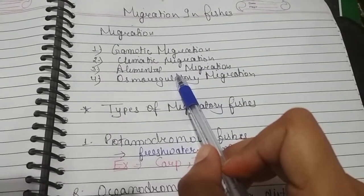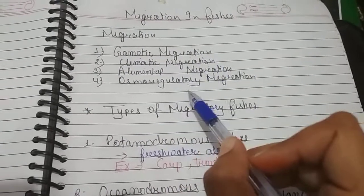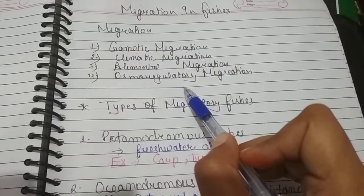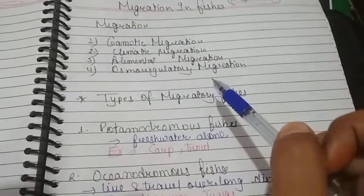elemental migration in search of food and water, and osmoregulatory migration for proper osmoregulation. Now, the types of migratory fishes: